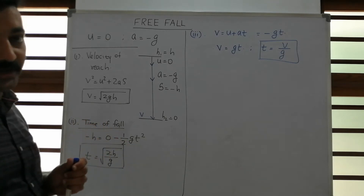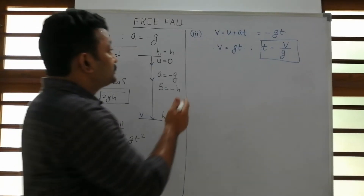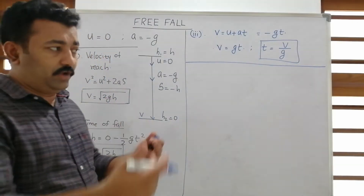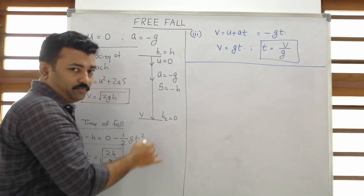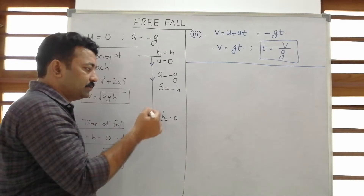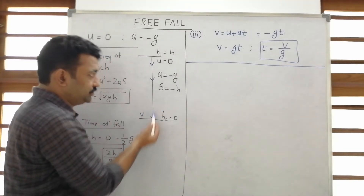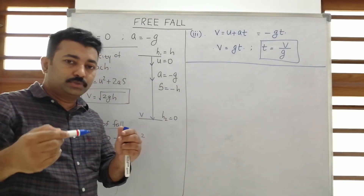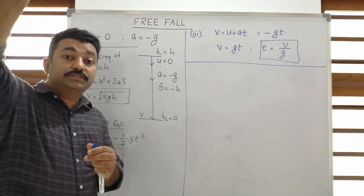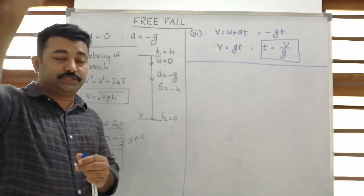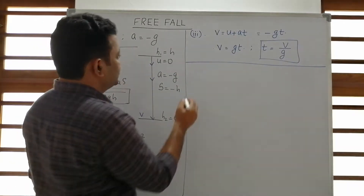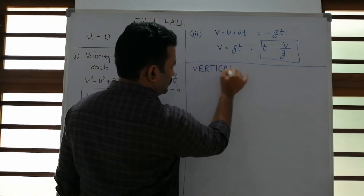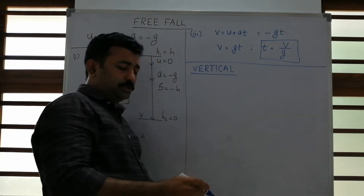These are the observations done in the theory session on free fall. Now I am going to extend this concept another way. We have seen the particle falling down; now suppose we assume that a particle is projected upwards — a particle which is thrown up. This would also be used for problems involving bouncing and vertical projection.